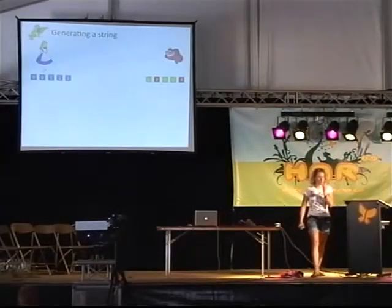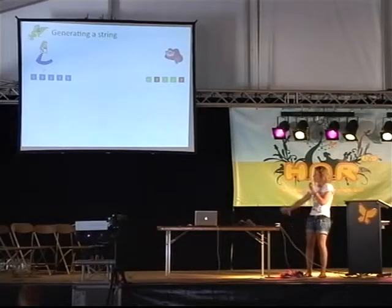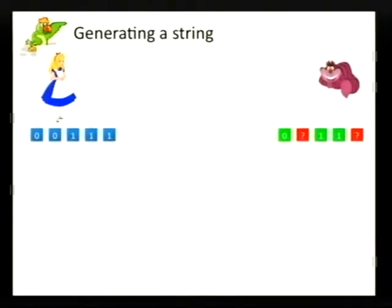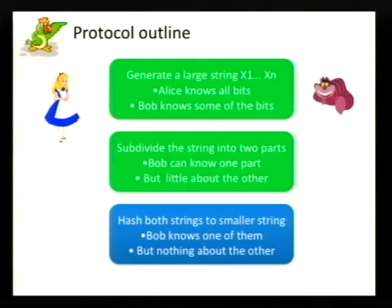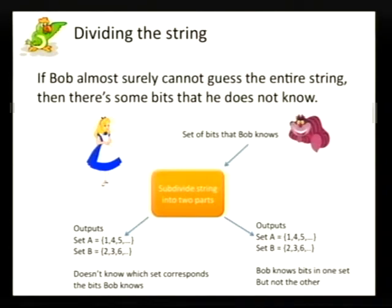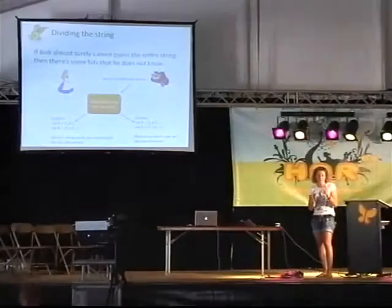Let's recall what we have achieved in the first step of the protocol. Alice has a string, Bob also has a string and knows some of the bits — the green bits are the ones that he knows, and the red ones are the ones he doesn't know because he measured in the wrong color. Now let's go to step two: we'll subdivide the string into two parts, with the goal that Bob can know one of them but knows quite little about the other. If Bob cannot guess the entire string, there will be some bits that he does not know.